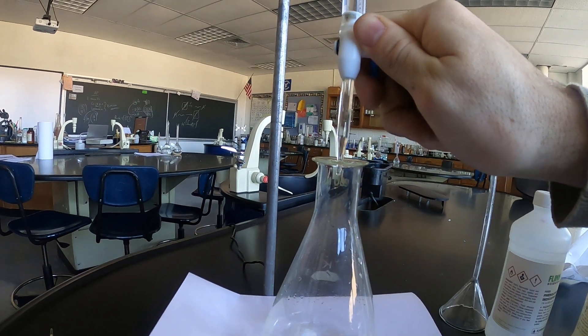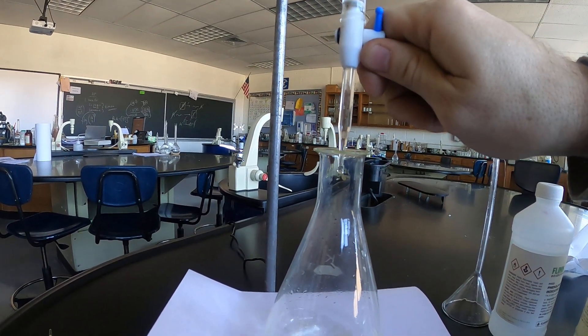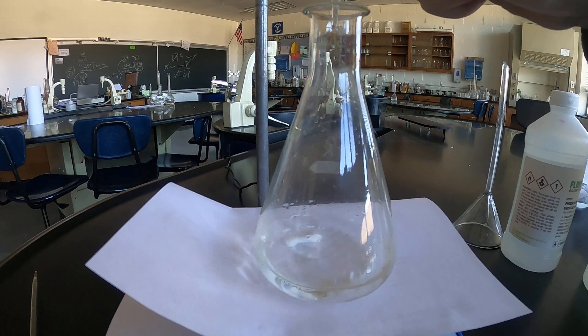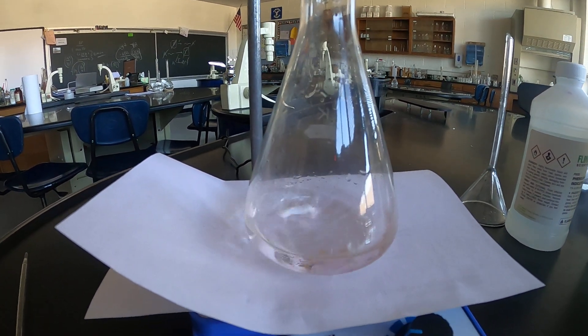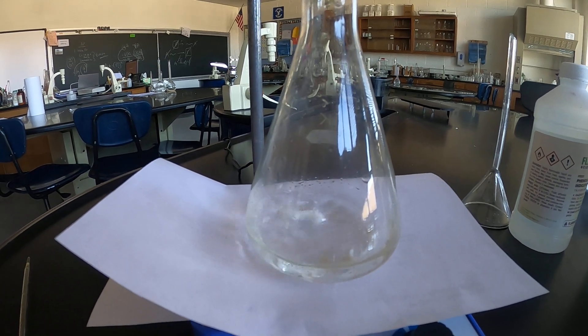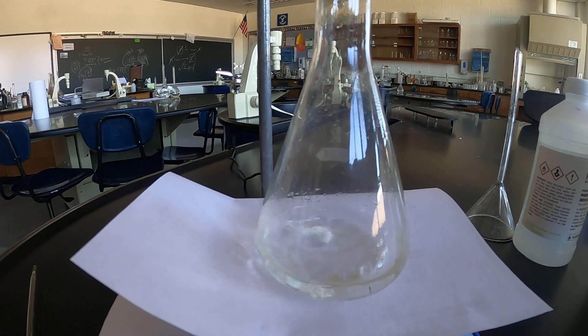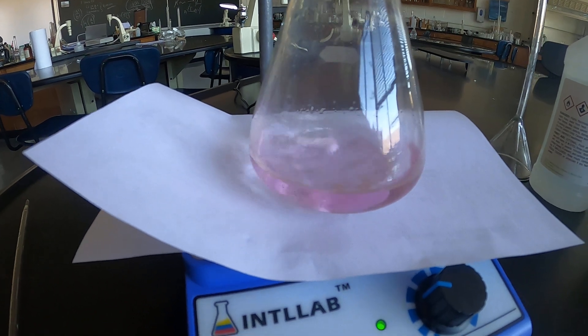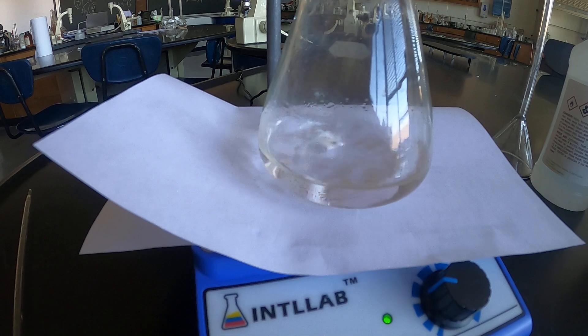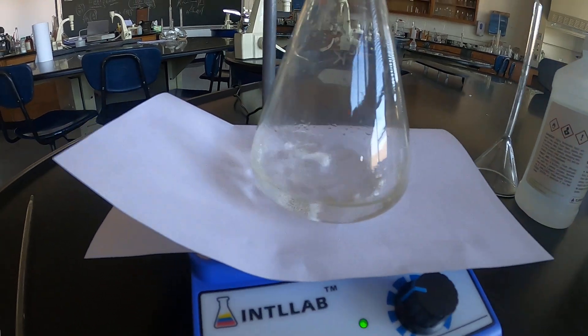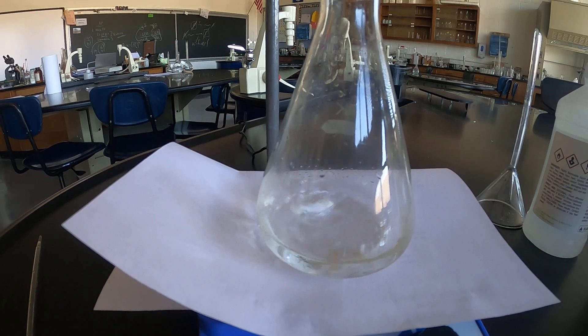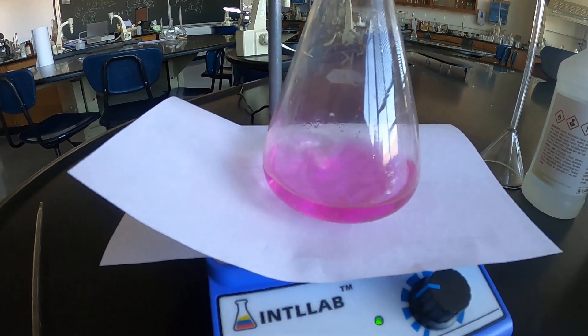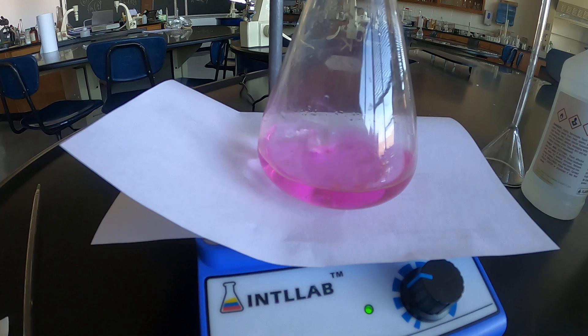I'm adjusting my stopcock to let out essentially one drop very slowly. Very close to the endpoint there. And then let out one more drop. Very close. pH is very close to seven at this point. And we're going to wait for this pink color to withstand for about 30 seconds. Phenolphthalein changes very sharply at the endpoint. Essentially one more drop. Again we're looking for a pink color that persists for essentially more than 30 seconds.